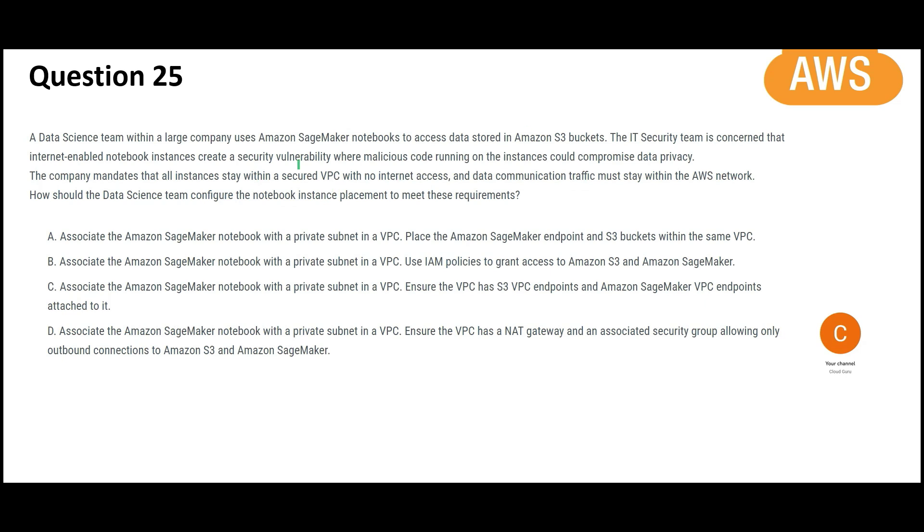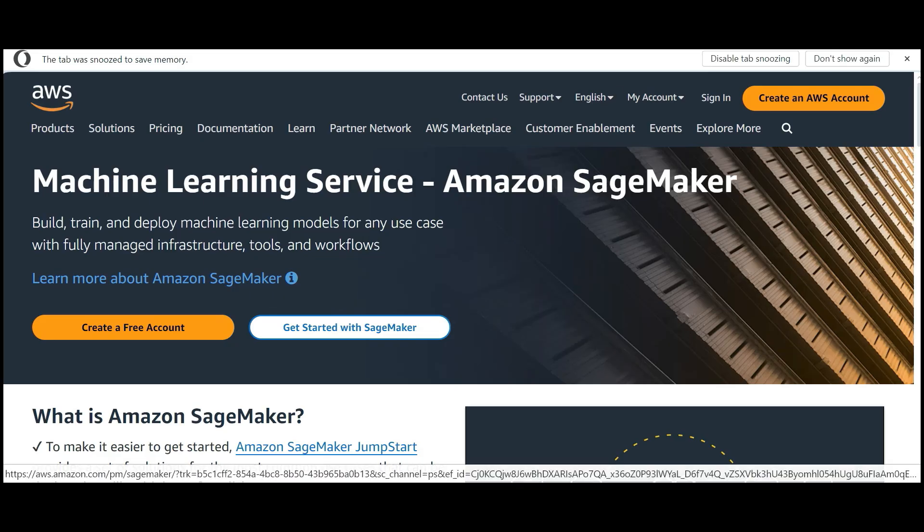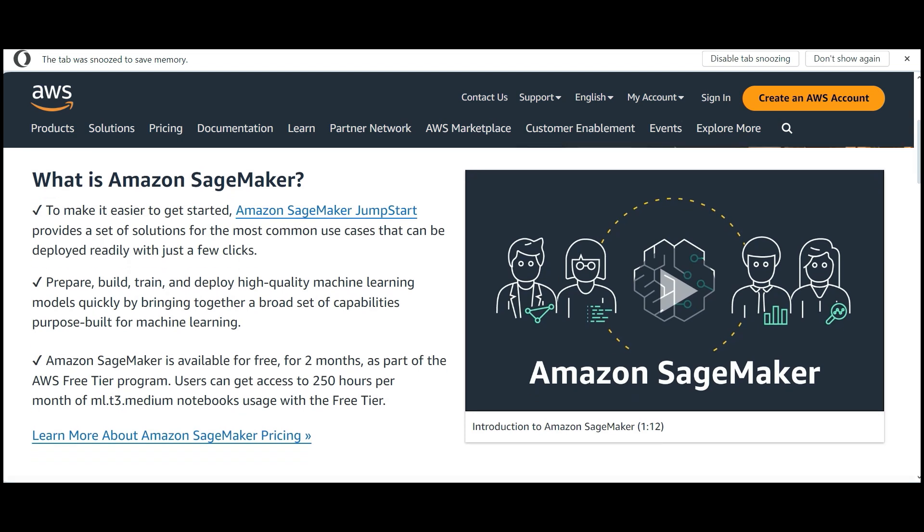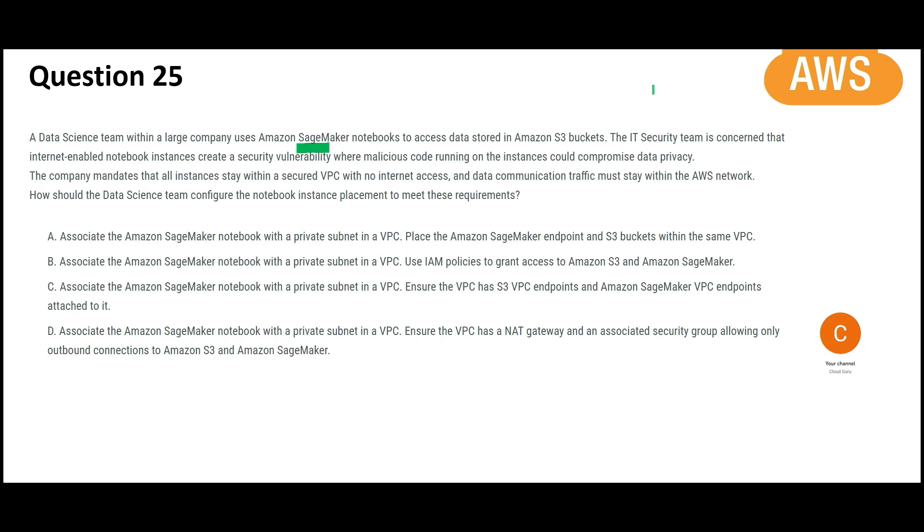In the next question, you are making use of SageMaker. And this service you can use for building, training, machine learning models. So the problem is if you give access over internet, they are thinking that it is not secure, somebody can run their code on our instances. And through that they can hit the data also. So the company says, all instances should be within a secured VPC and with no internet access.